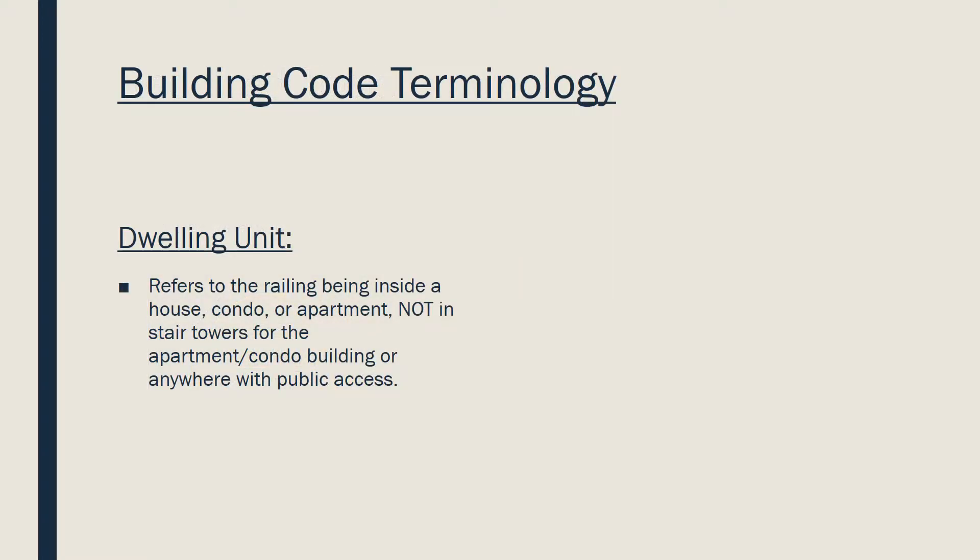Before we begin, it is important to be familiar with the terms that will be used. First, a dwelling unit refers to the railing being inside of a house, condo, or apartment — not in the stair tower for the apartment or condo building, or anywhere with public access.